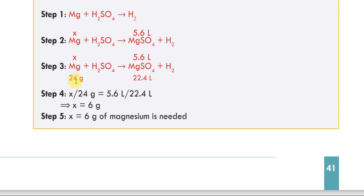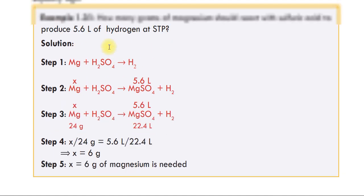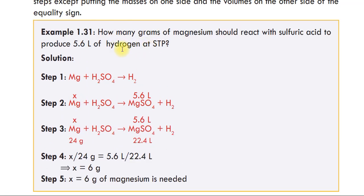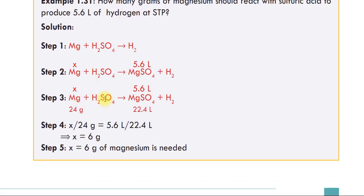Step 2: Write 24 grams above magnesium (its molar mass) and the molar volume 22.4 L below H₂, since one mole of any gas at standard temperature and pressure occupies 22.4 liters. Place x above magnesium and 5.6 L above hydrogen.